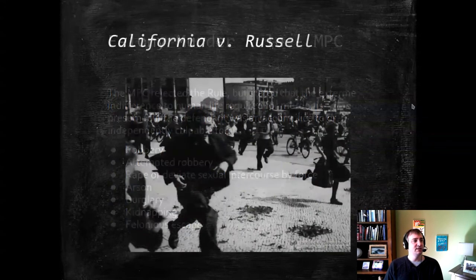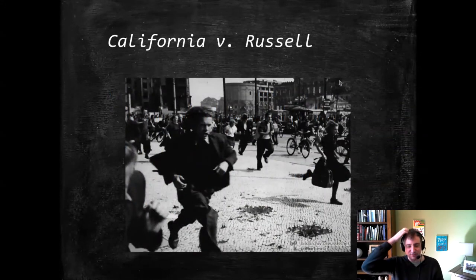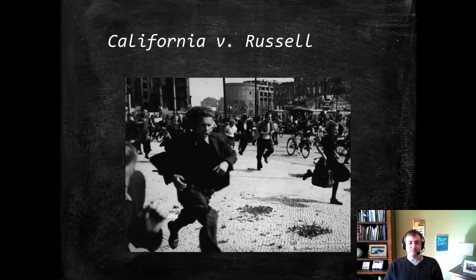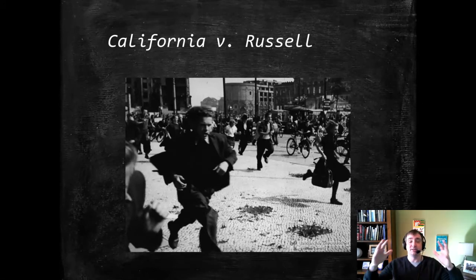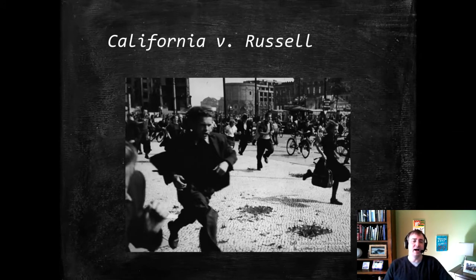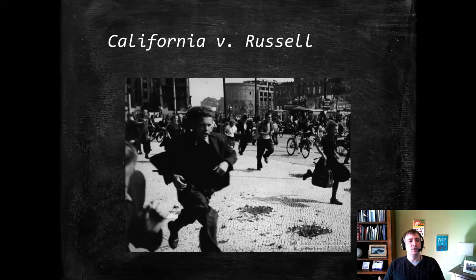So let's look at California v. Russell. In this case we're looking at two things of import: what does 'in the commission of a felony' mean — when does it begin and when does it end? We're also seeing the plain rule applied without modern limitations, because they just don't come to bear on the specifics here. We know our defendant is committing a felony — he is engaged in a residential burglary and a vehicle theft.